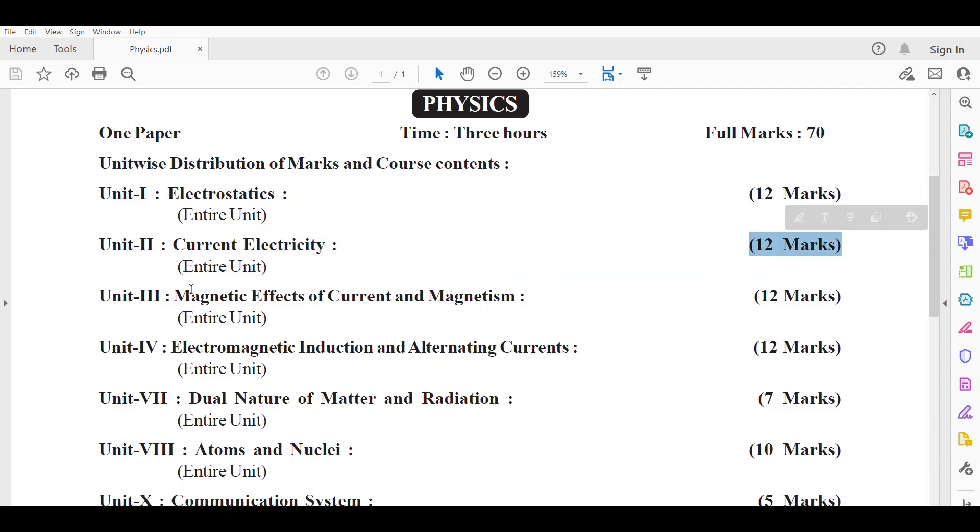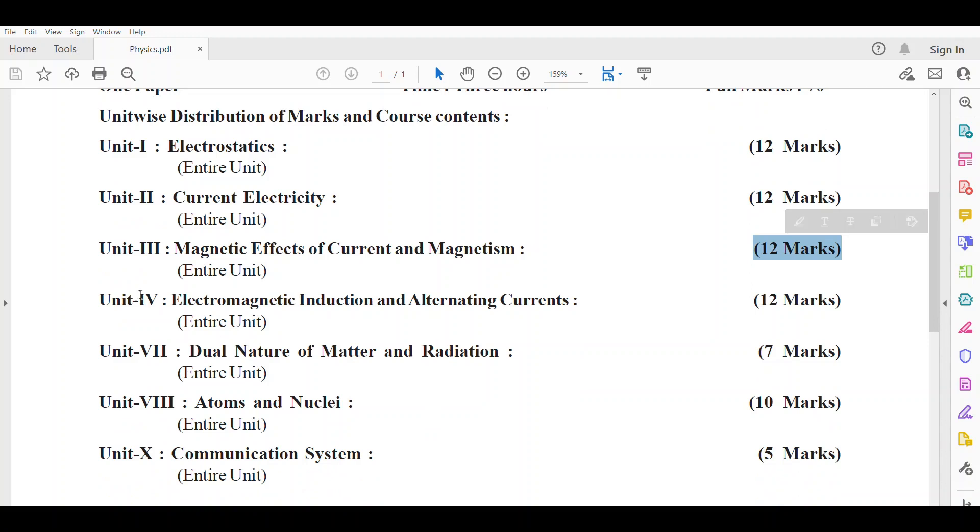Unit 3 is Magnetic effects of current and magnetism. Unit 4 is Electromagnetic induction and alternating currents.